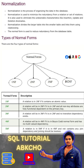Then we have Second Normal Form (2NF), which builds on 1NF by ensuring that all non-key attributes are fully dependent on the primary key. Then we have Third Normal Form (3NF), which further refines 2NF by removing transitive dependencies, ensuring that non-key attributes are only dependent on the primary key.